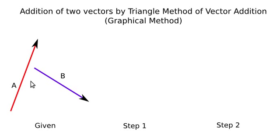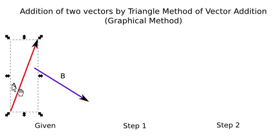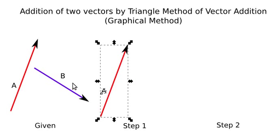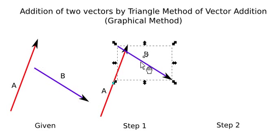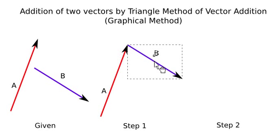Leaving the given arrangement as is, I will redraw in step one: vector A, and now move vector B such that the head of A is at the tail of vector B. Moving vector B, I now have the head of A at the tail of vector B. Step one complete.